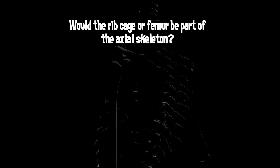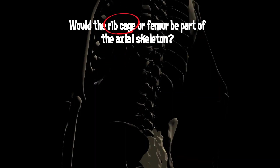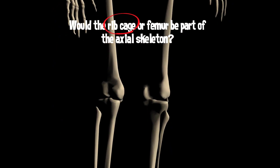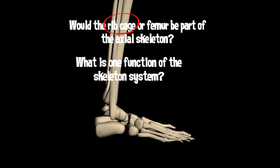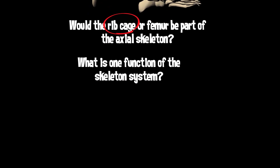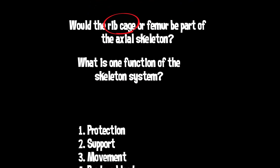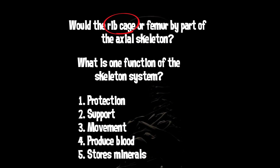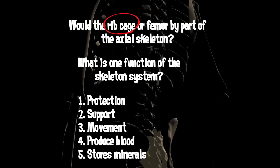Let's get back to these original questions. The rib cage would be part of the axial skeleton. The skeletal system provides several functions including protection, support, movement, producing blood cells, and storing minerals and fats.